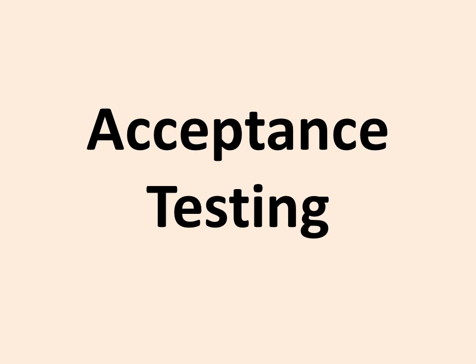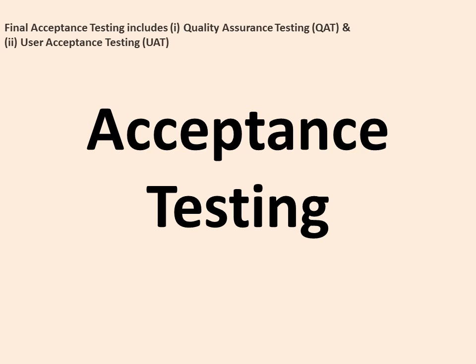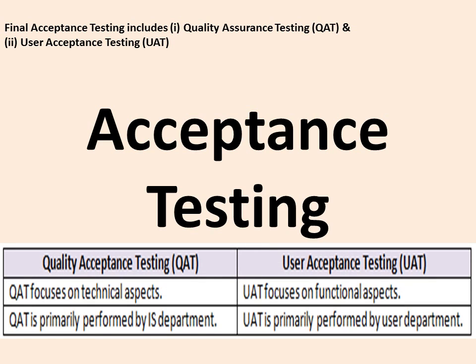Acceptance testing includes quality assurance testing (QAT) and user acceptance testing (UAT). QAT focuses on technical aspects and is done by the IS department. UAT focuses on functional aspects and is done by the user department.